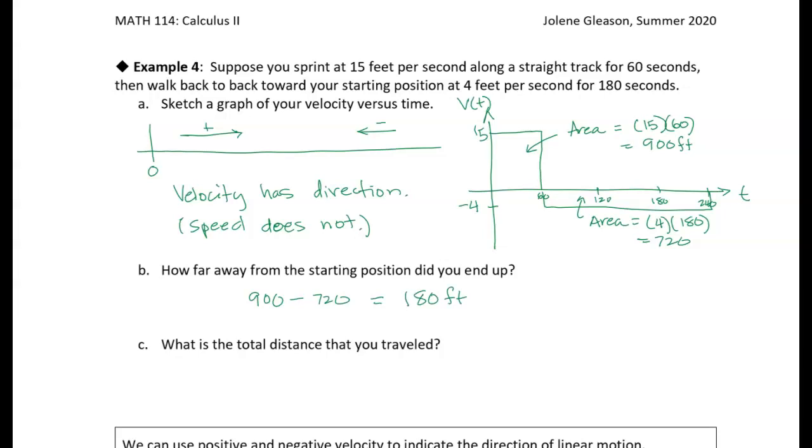And sometimes that's what we want. We want to know where did we end up, what's our current position. But another question we could ask is just how far you traveled, right? What's the total distance that you traveled? And in that case, we went 900 feet and then we also went another 720 feet. Right? So that gives us a total distance that we traveled of 1,620 feet.